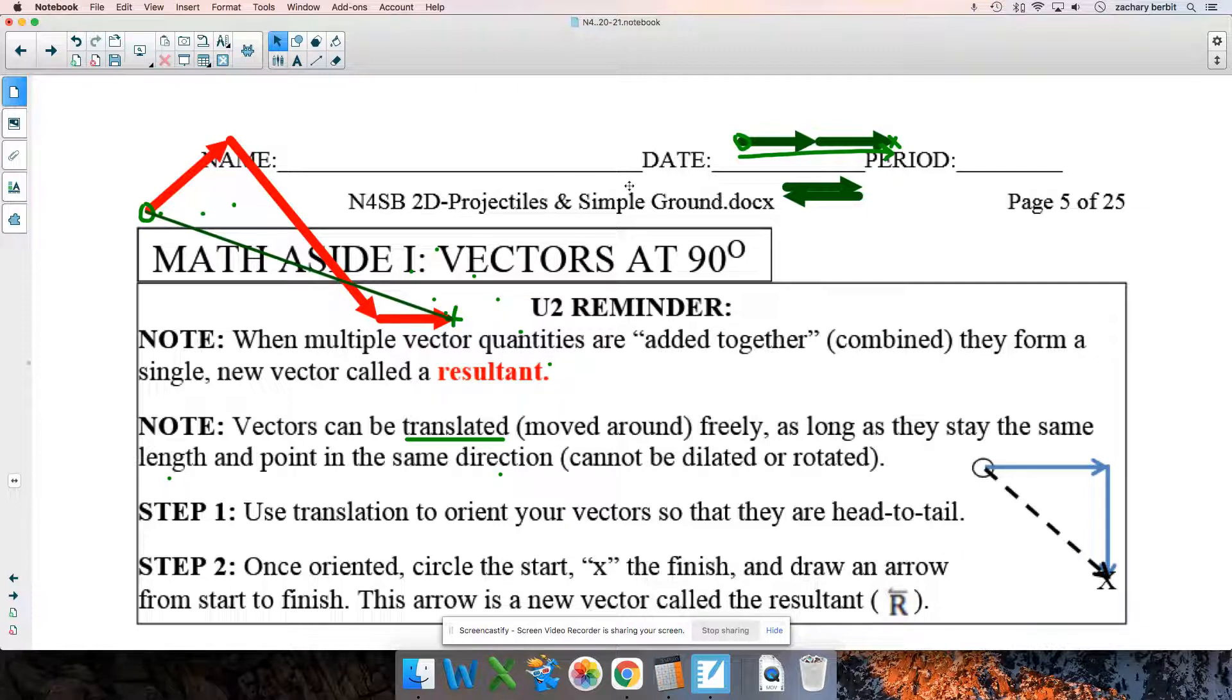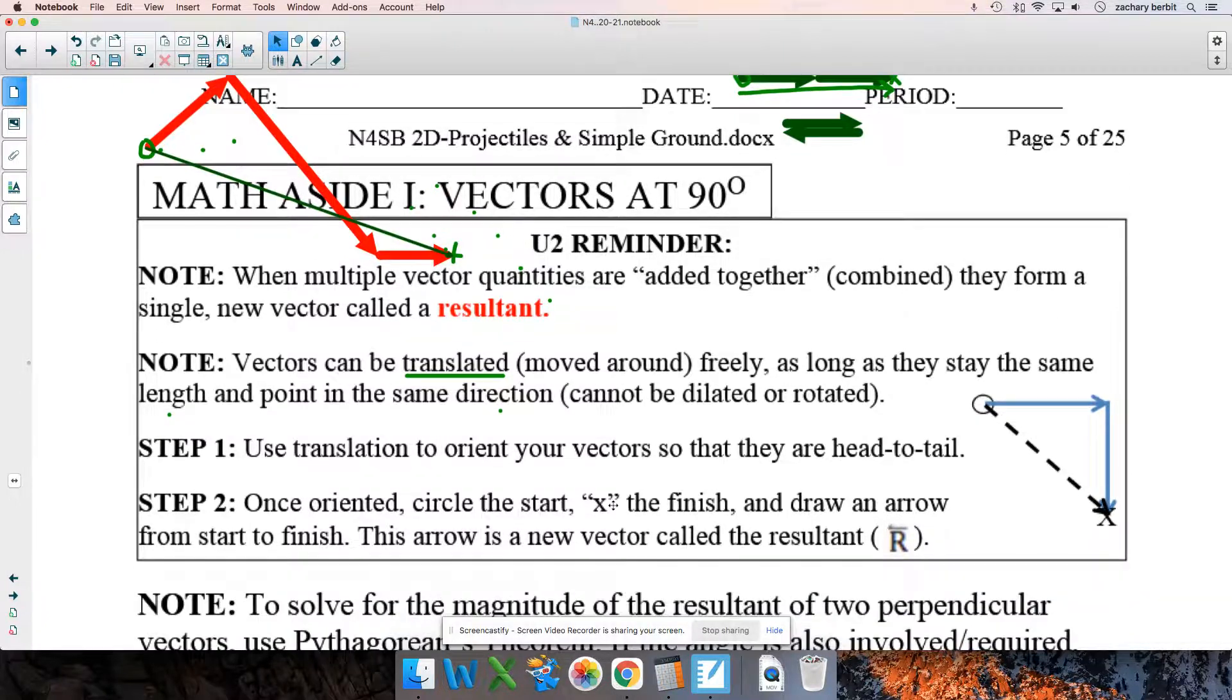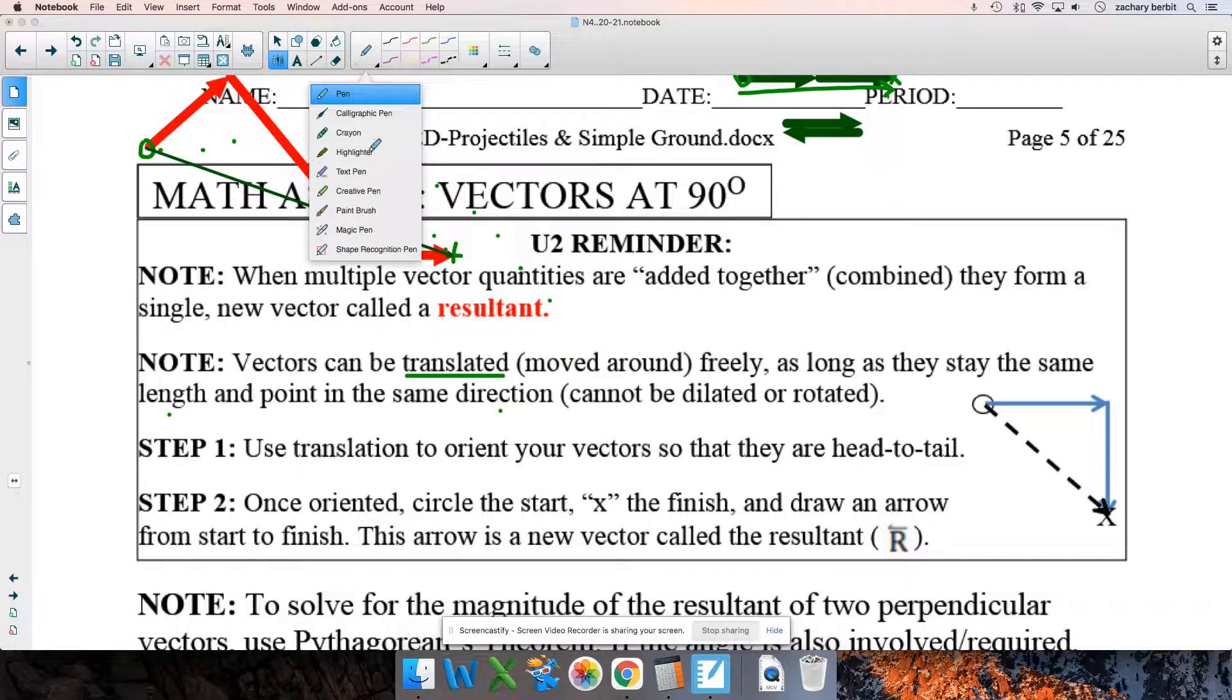As long as you head to tail, circle, start, X to finish. It's a real algorithm for getting you the resultant. And each individual piece, what they call their components, each individual component must maintain its length and its direction. All right. So, there's that step one. Orient them so they're head to tail. And then step two, circle the start, X to finish, draw the resultant. Now, notice what the title of this page is. It's at 90 degrees.